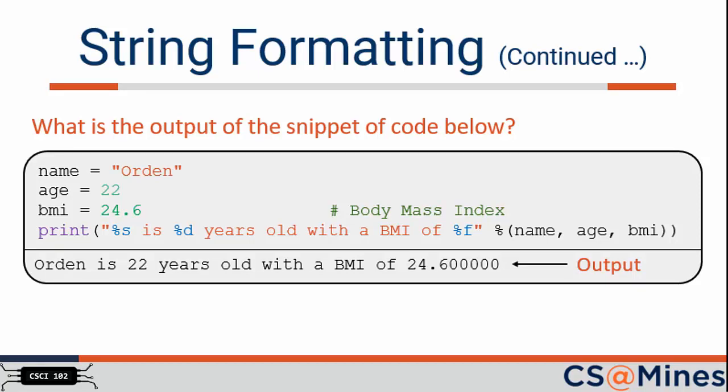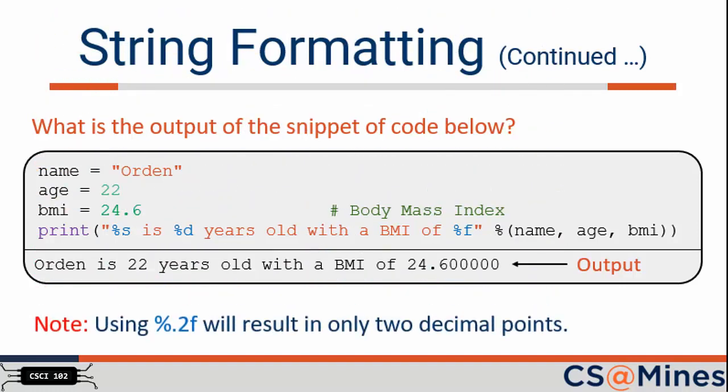But if you tell the computer to not print so many, it won't, as shown in this example. That is, you can limit the number of digits in the output of a float by adding 0.2 to the percent operator. Now that you have a good feel for how to format output with the percent operator, let's talk about fstrings.